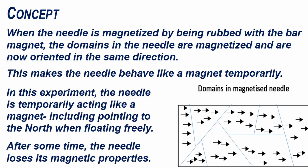When the needle is magnetized by being rubbed with the bar magnet, the domains in the needle are magnetized and are now oriented in the same direction. This makes the needle behave like a magnet temporarily.